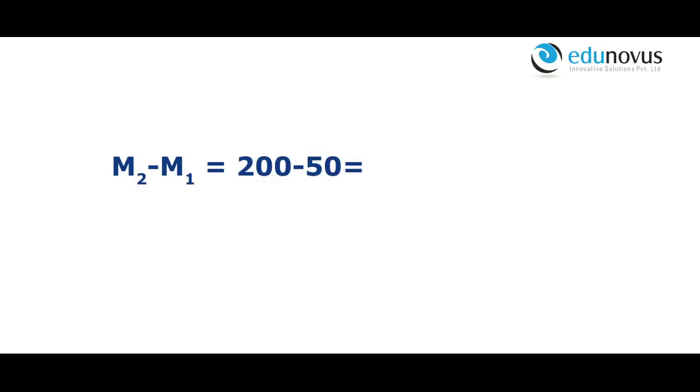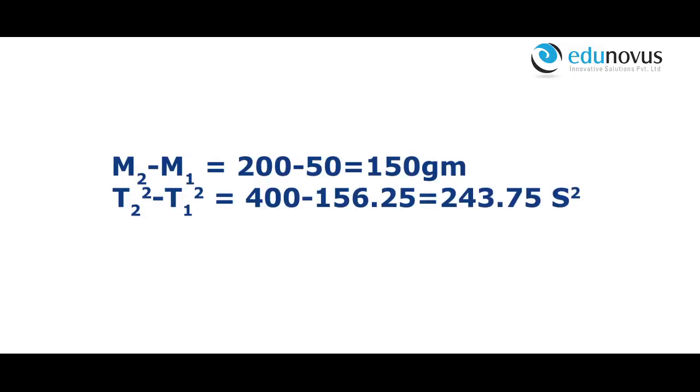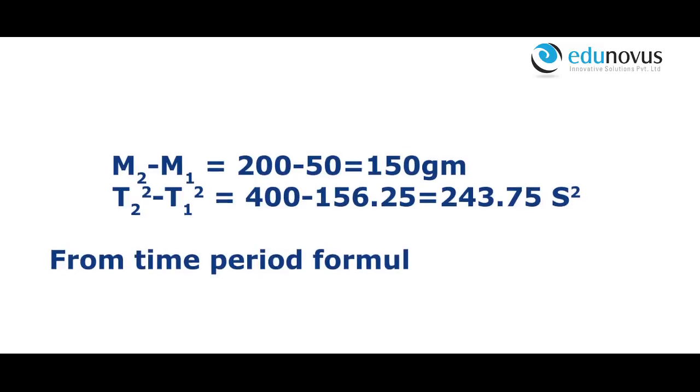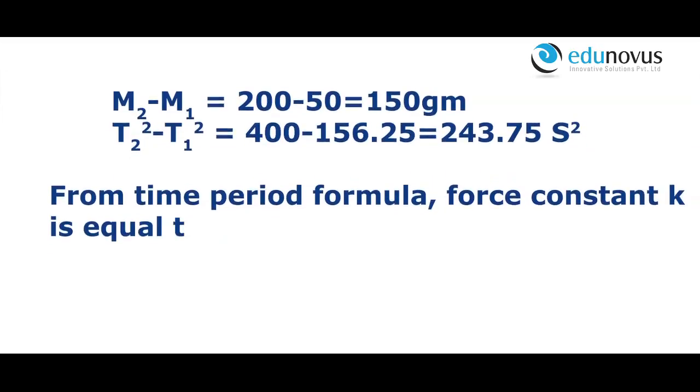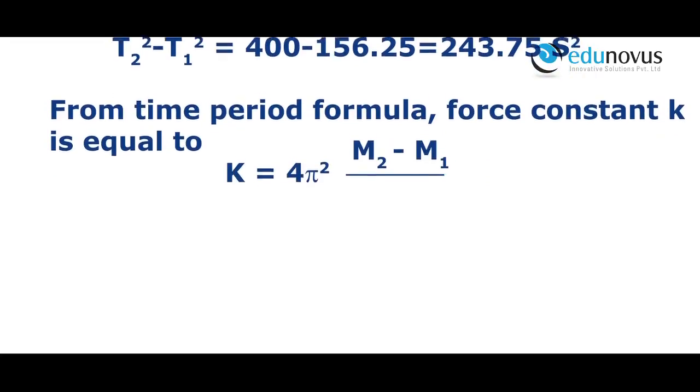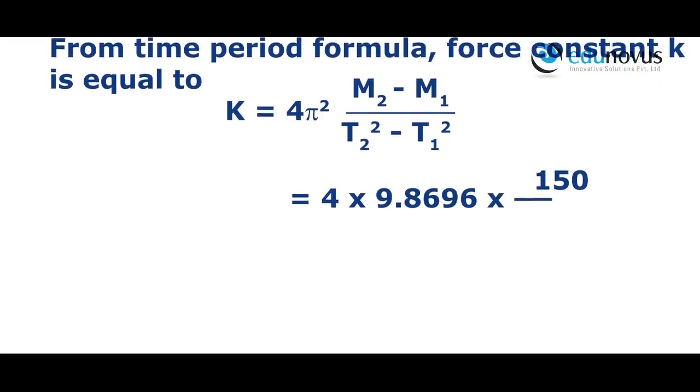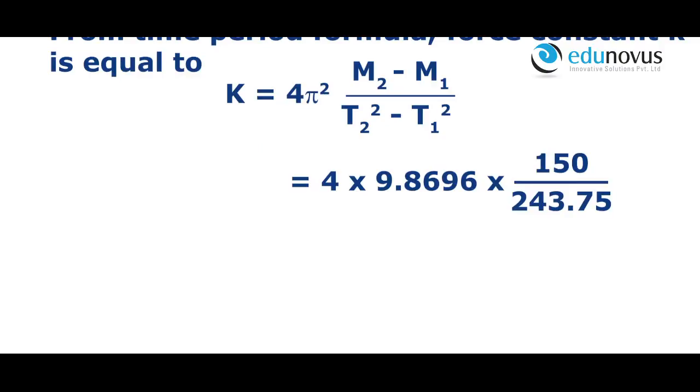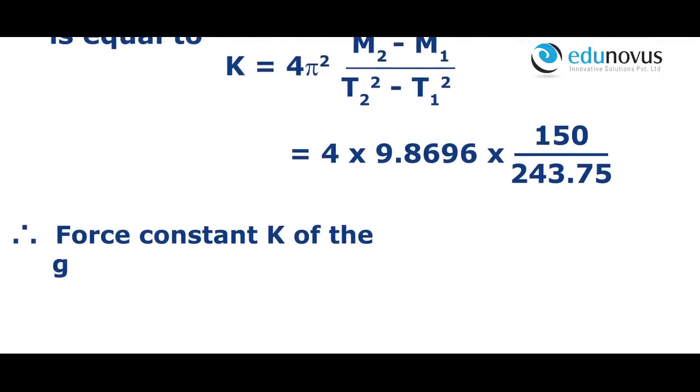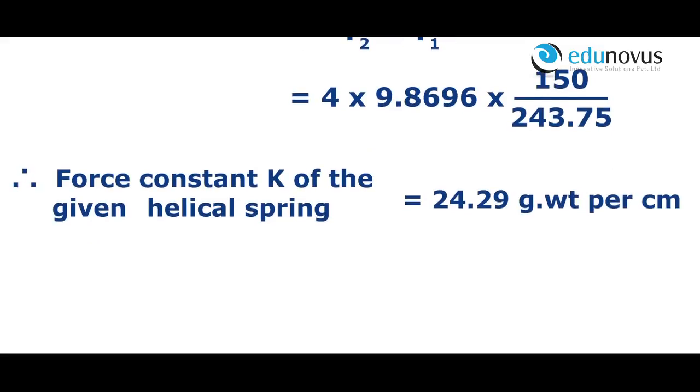M₂ - M₁ = 200 - 50 = 150 grams. T₂² - T₁² = 400 - 156.25 = 243.75. From the time period formula, force constant k = 4π²(M₂ - M₁)/(T₂² - T₁²) = 4 × 9.8696 × 150 ÷ 243.75. Therefore, force constant k of the given helical spring equals 24.29 gram-weight per centimeter.